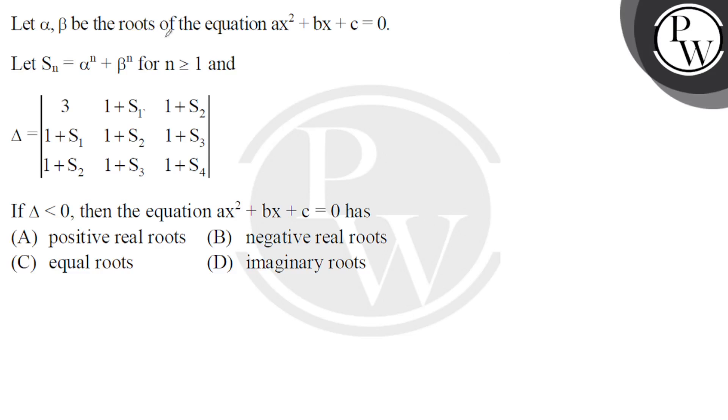Hello boys, here we have alpha and beta as the roots of this equation, and let Sₙ = α^n + β^n for n ≥ 1. Then we have a determinant Δ which is less than 0.